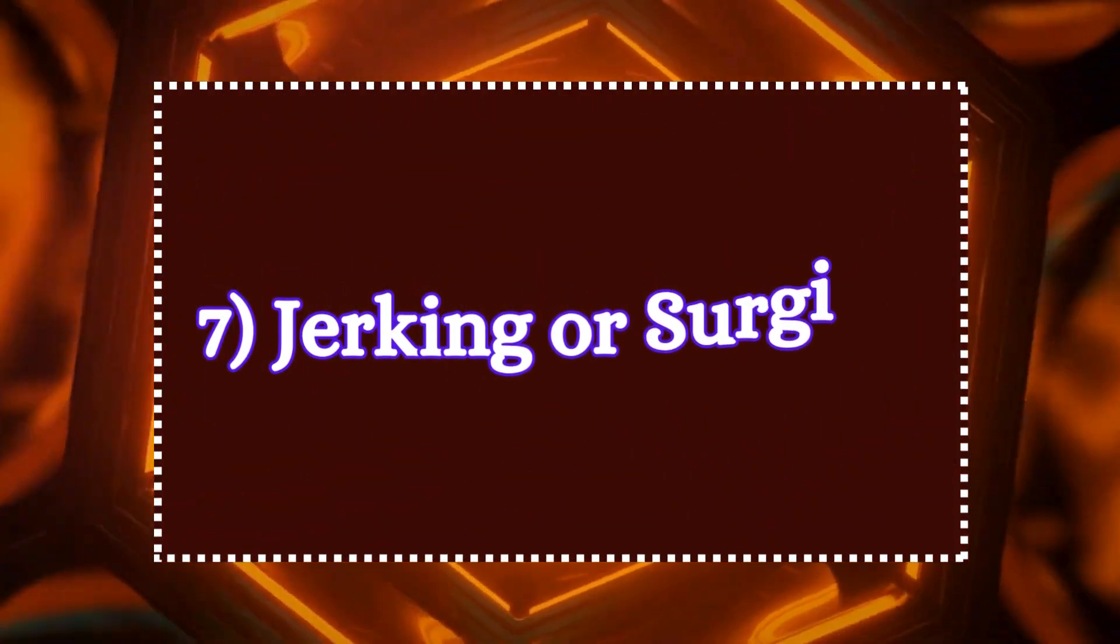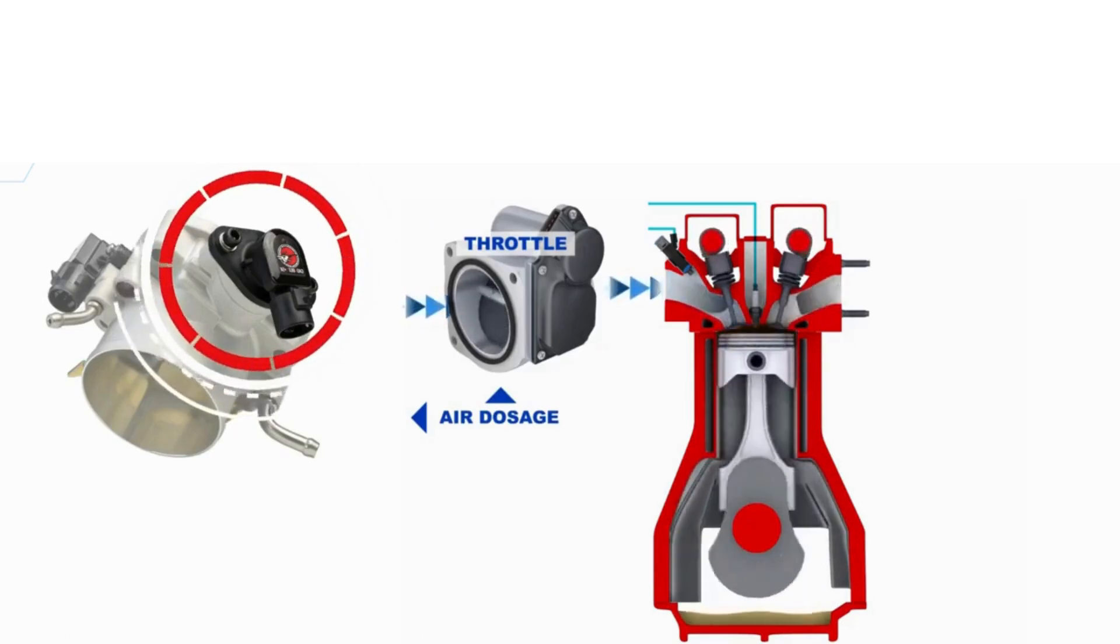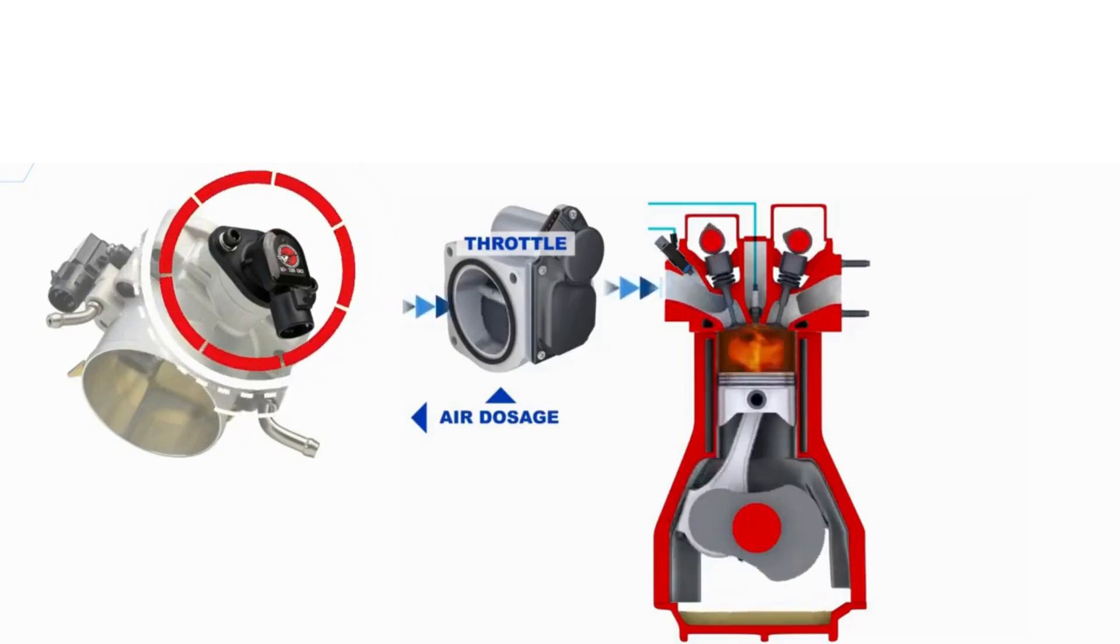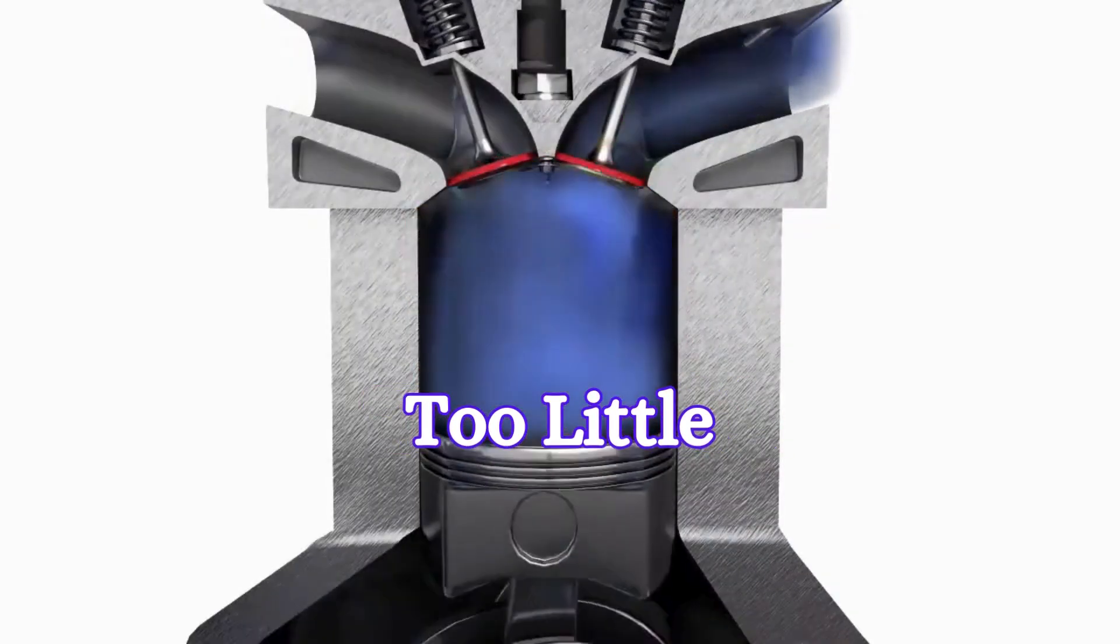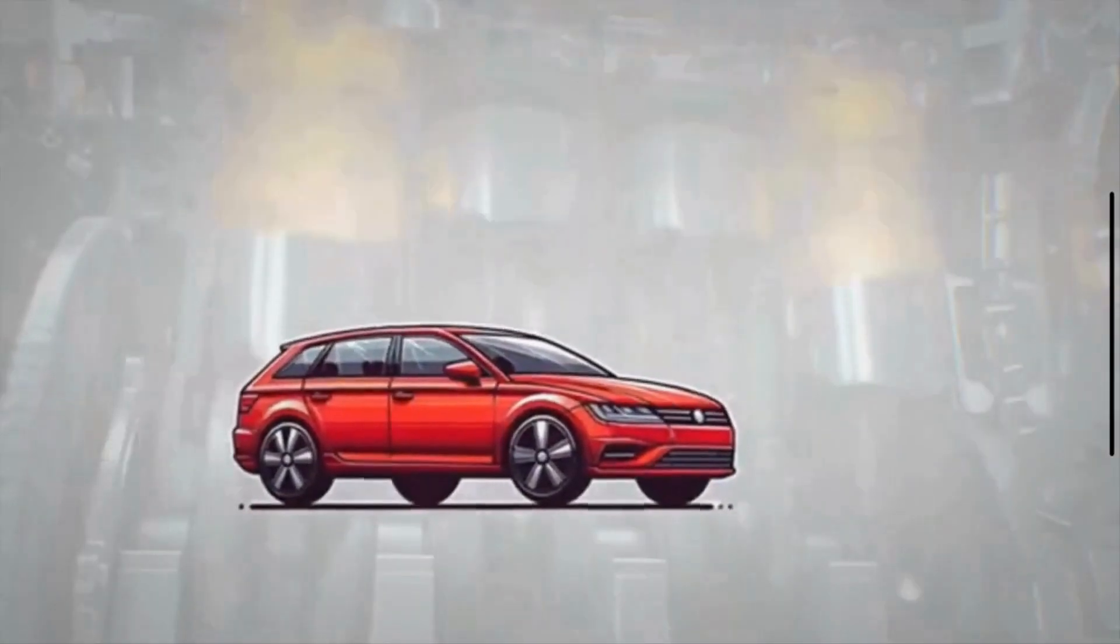7. Jerking or surging. Inconsistent airflow caused by a malfunctioning throttle body can lead to improper combustion cycles. This can cause the engine to either receive too much or too little air, resulting in jerking or surging when driving.